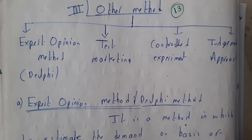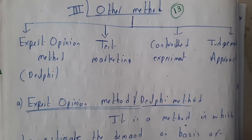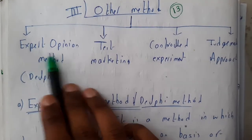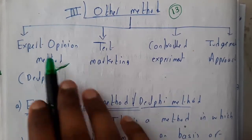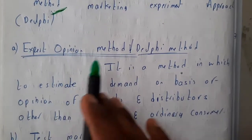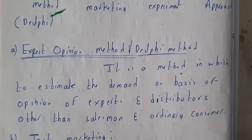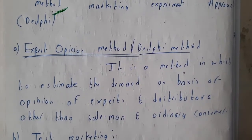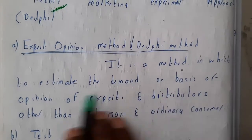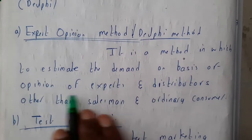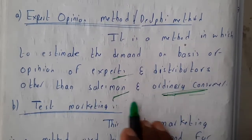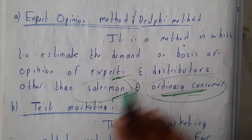The first method is the Delphi method, which can also be called the expert opinion method. From the name itself, we can say it involves expert opinion — an expert or a business consultant will be taken, and they will be estimating our current situation and predicting the future. In this method, demand is estimated based on the opinion of an expert or distributor, other than the salesman and ordinary customers.